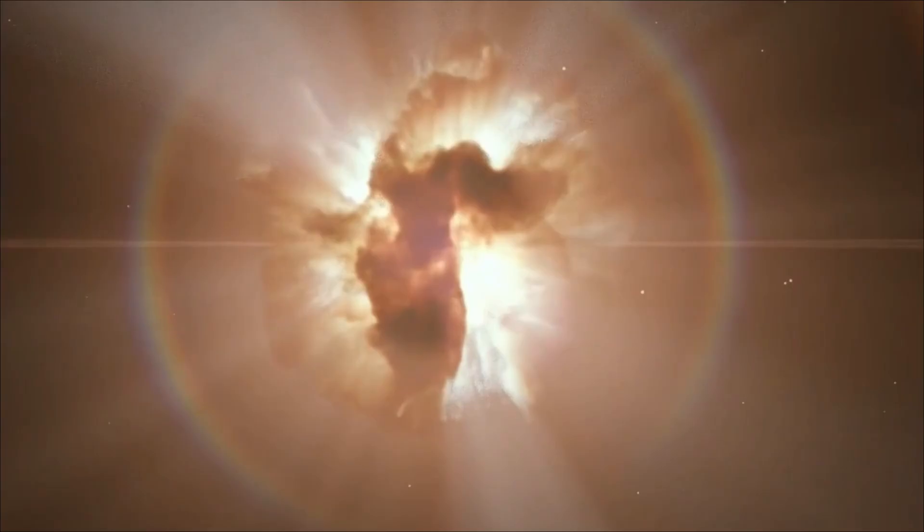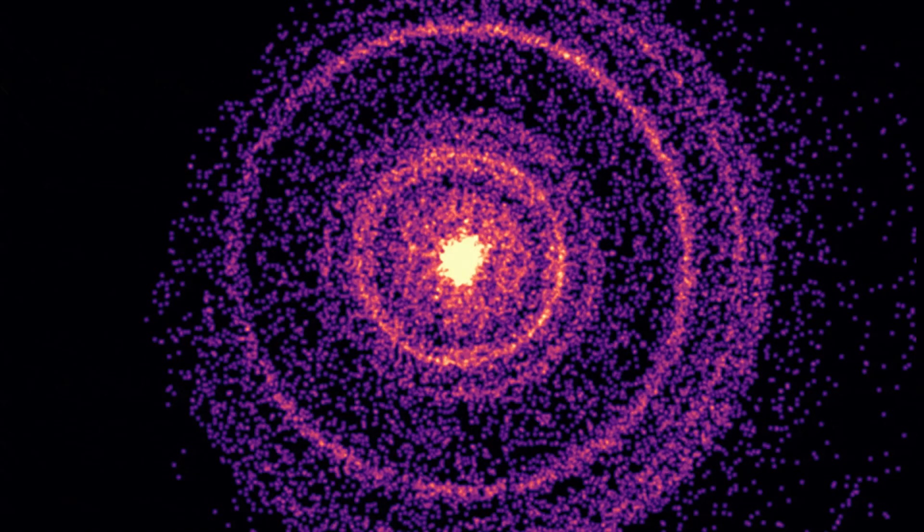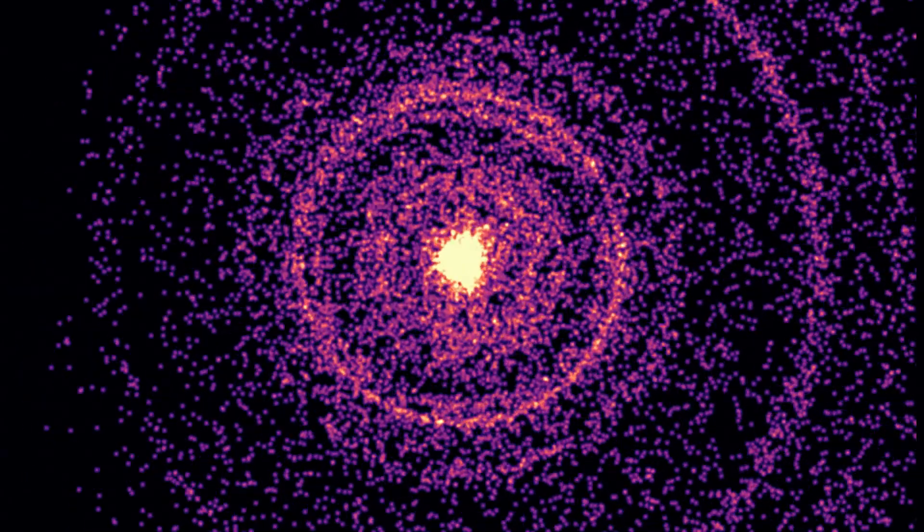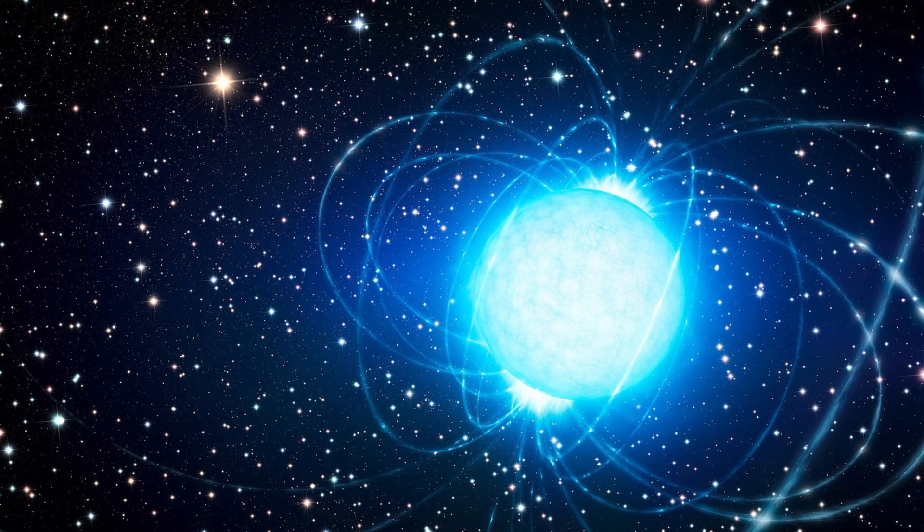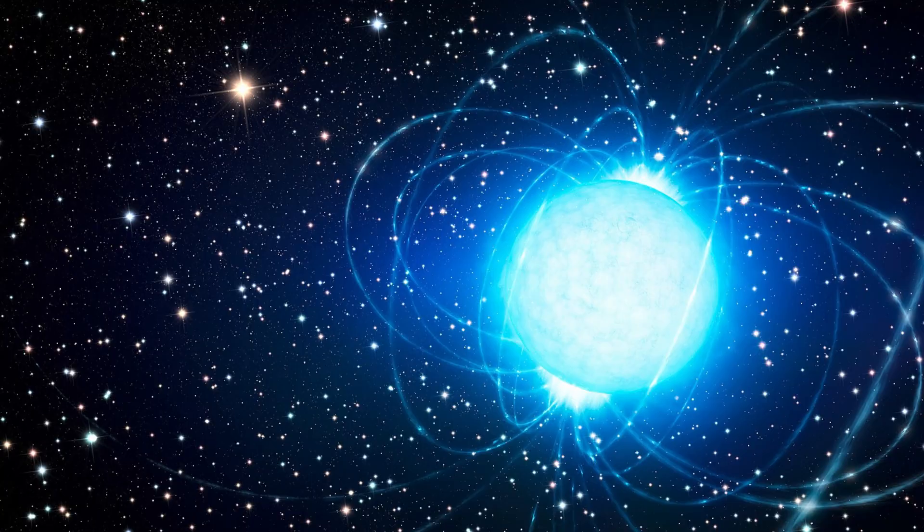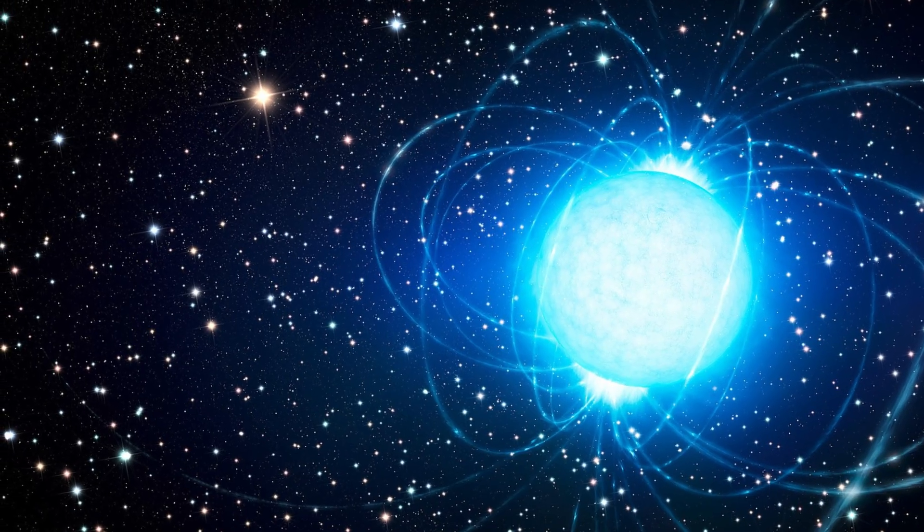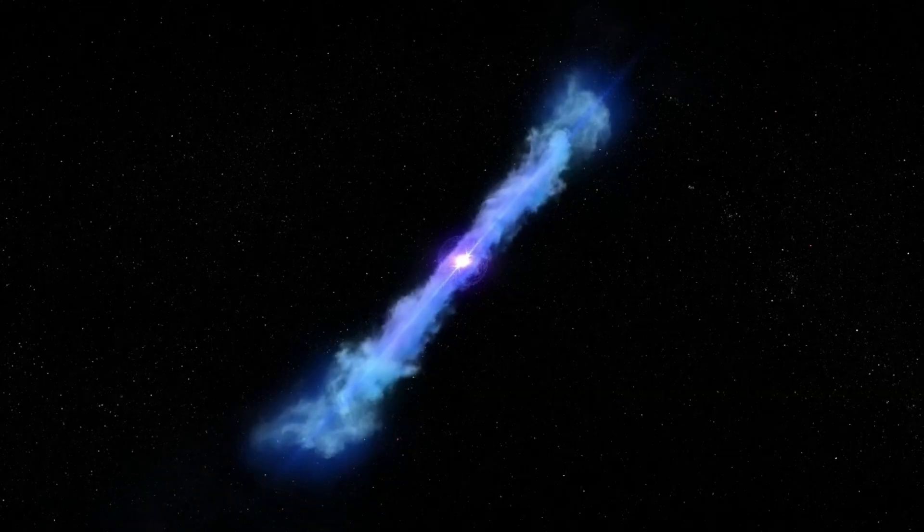A magnetar, a neutron star with a magnetic field so strong it could erase every credit card on Earth from halfway across the solar system. The surface is solid iron, the core is degenerate matter, and the field lines snap and twist like cables under stress.